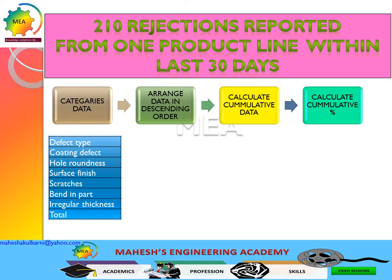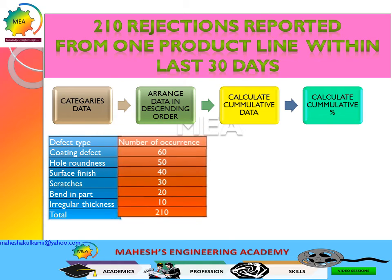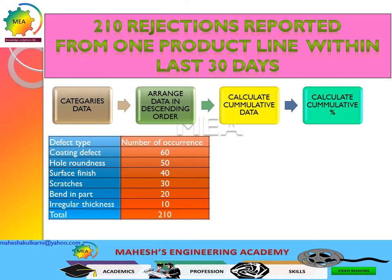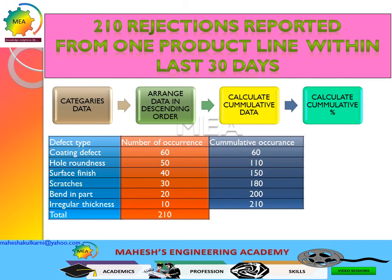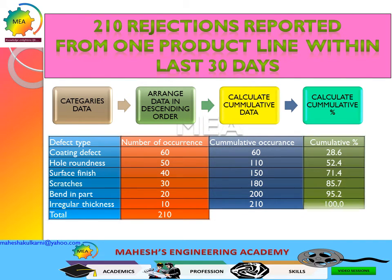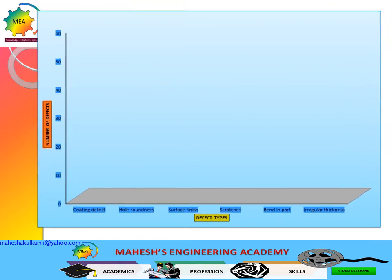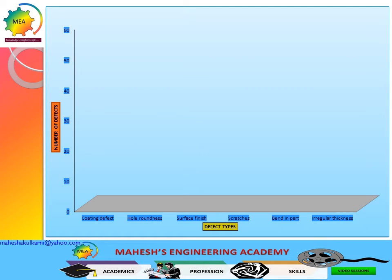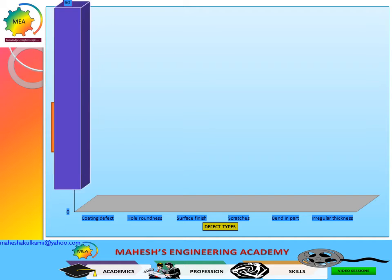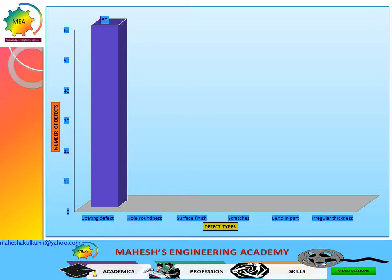Let us see how many occurrences each defect type has. The data are arranged in descending order, counting to a total of 210 rejections. The third step is cumulative occurrences and the fourth is percentage of cumulative occurrences. The defects are along the x-axis — coating defect, hole roundness, surface finish, scratches, bend in parts, irregular thickness — and number of defects along the y-axis. The first one, coating defects, has 60 occurrences.